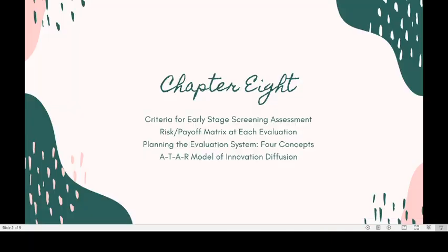In Chapter 8, you will learn the criteria for early stage screening assessment. Second, you will learn about the risk or payoff metrics at each evaluation. Third will be the planning of the evaluation system, which consists of four concepts. And the last one, you will learn about the ATAR model of innovation diffusion.